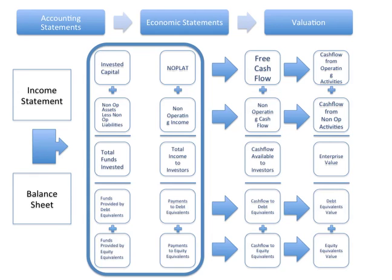When we reorganize the income statement, we get what's called Total Income Available to Investors, or TII. These two statements are not GAAP — they're McKinsey statements mapping to the Modigliani-Miller model. Everything labeled one on the income statement gets us NOPLAT; twos give us non-operating income. NOPLAT plus non-operating income equals TII, which is the income available to pay out interest expense (threes) and shareholder income (fours). So again, one plus two equals three plus four.